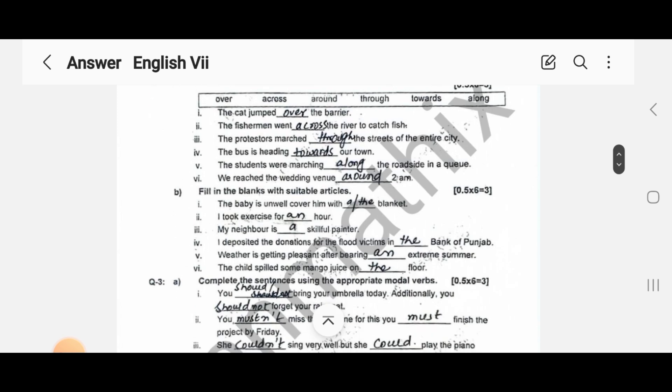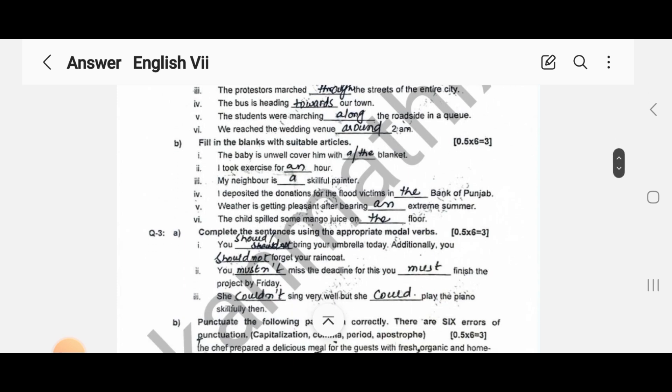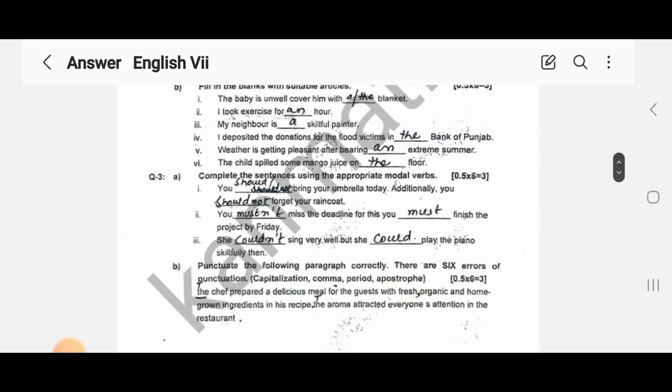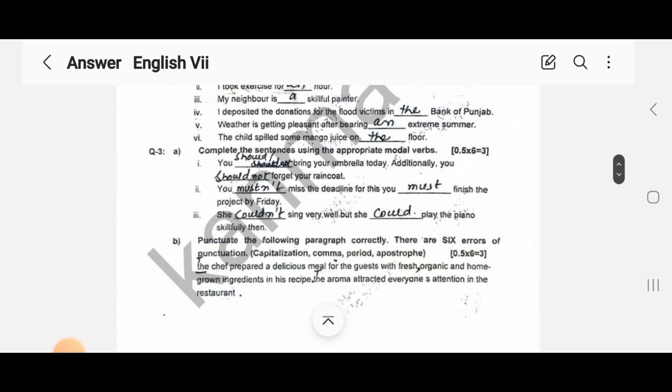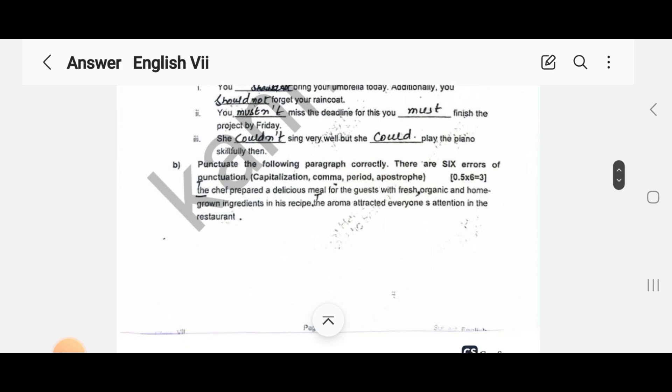Question number three: we have to use the modal verbs. In the first, 'you should', and then 'you should not'. Second and third are solved. Then in the B part, you have to punctuate the following paragraph correctly. There are six errors of punctuation which have been identified and corrected.